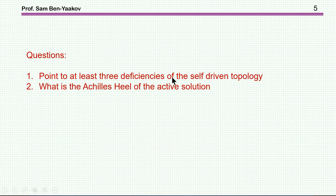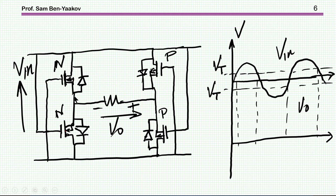The questions of the riddle were as follows: point to at least three deficiencies of the self-driven topology, and then, what is the Achilles heel of the active solution? Before giving the answers, I'm going to explain the circuit, how it works, the problems we have, and then we'll be ready to answer the questions.